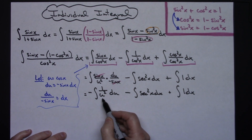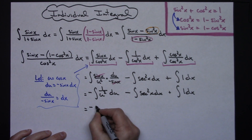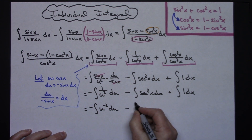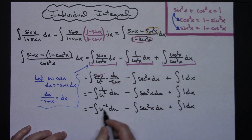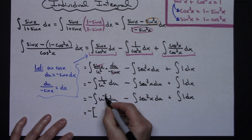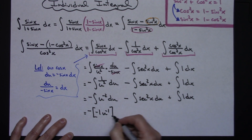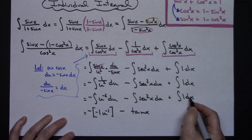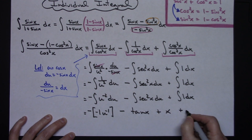The easiest way to integrate 1 over u squared is to move u squared to the numerator as a negative exponent, giving negative the integral of u to the negative 2 du. Now I can integrate all three. Adding 1 to the exponent gives u to the negative 1, and with the negative out front that becomes negative times negative giving positive. Integrating secant squared gives tangent x. Integrating 1 dx gives x. Since all three integrations are done, I can add plus C.